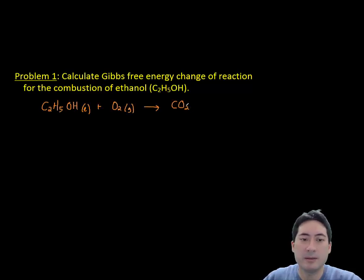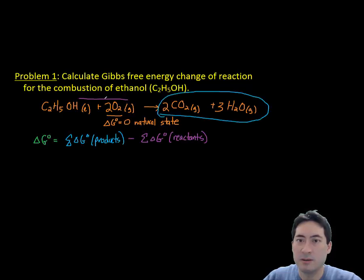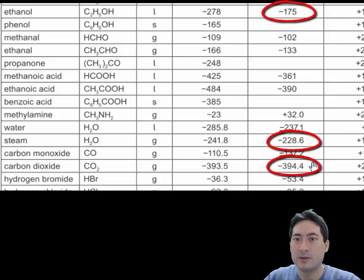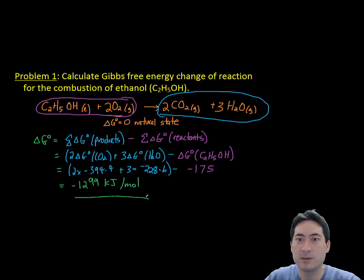Looking at another problem again, this is working out Gibbs free energy for combustion. There are many ways to do these equations, as you've seen now. So for this one here, we will use the equation delta G's products minus reactants. Again, the number of moles are important, so put the moles in there and get the values from your data booklet. Substitute those values in, and you'll get 1299 kilojoules per mole.